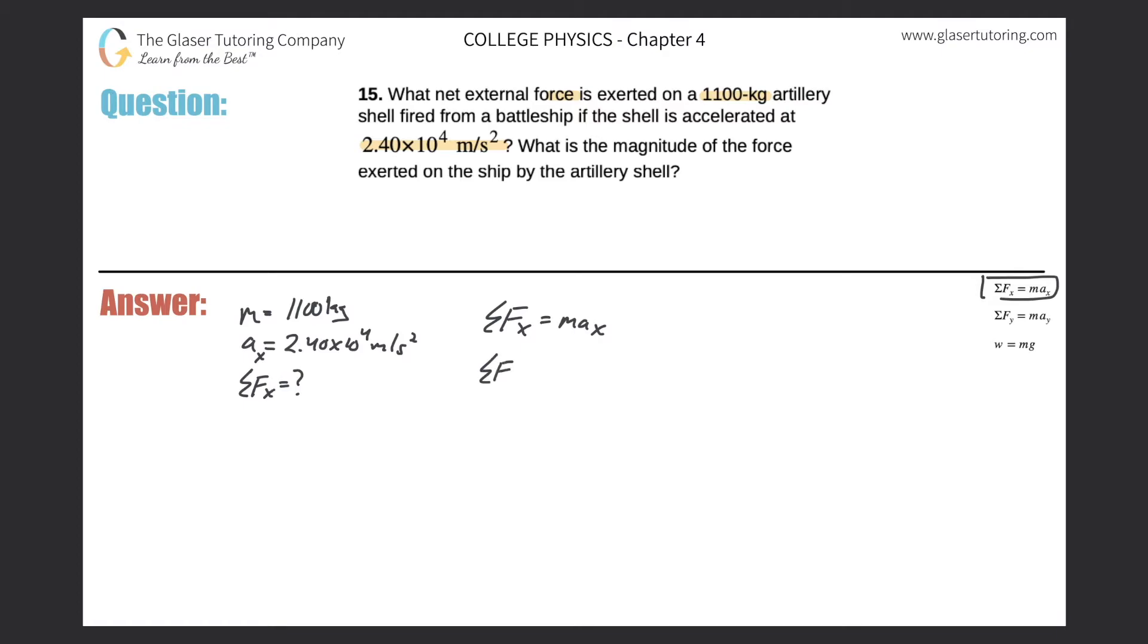So the sum of all the forces in the x direction here should be the mass of 1,100 multiplied by 2.40 times 10 to the 4. All the units work out.